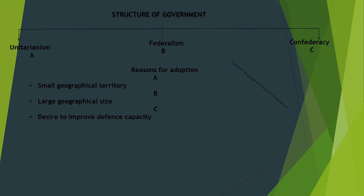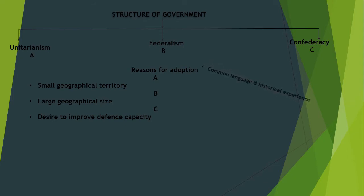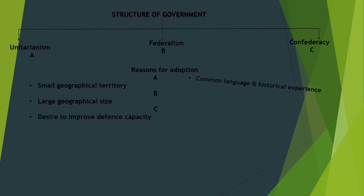It is the duty of the federal government to oversee and manage these various items. Next is the concurrent list. Concurrent lists are shared among the three tiers of government and include different types such as transportation and health. In Nigeria, we have federal hospitals, state hospitals, and primary health care is in the hands of the local government.